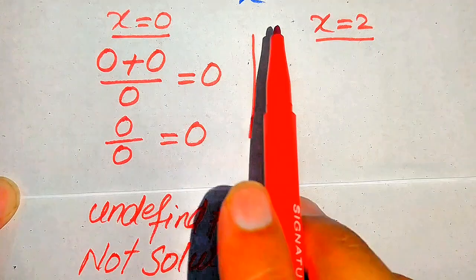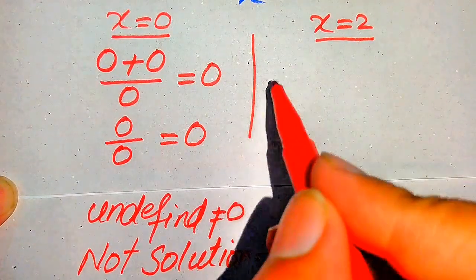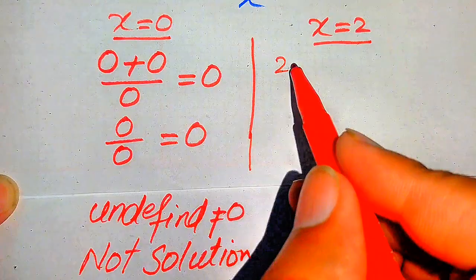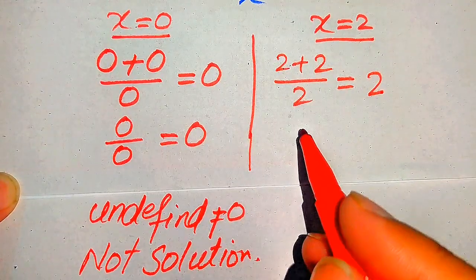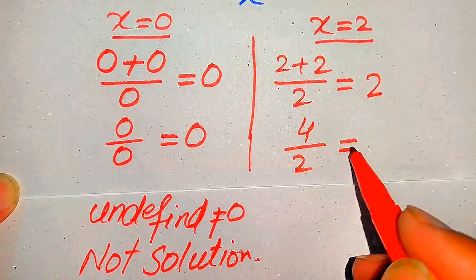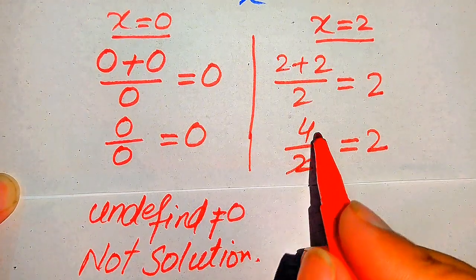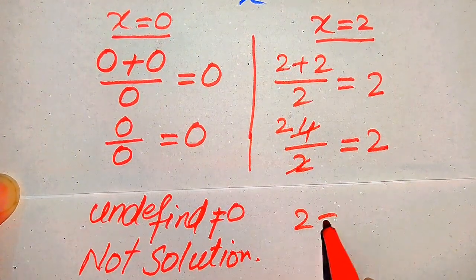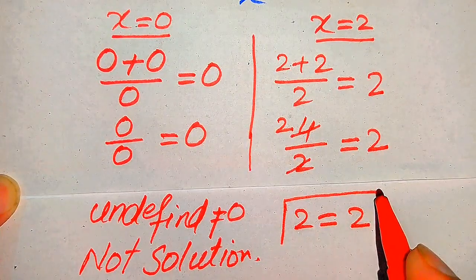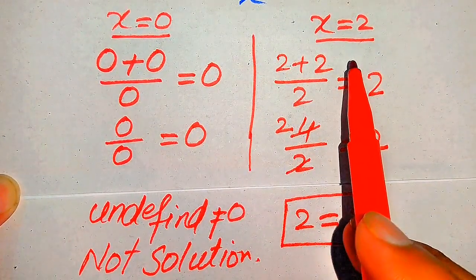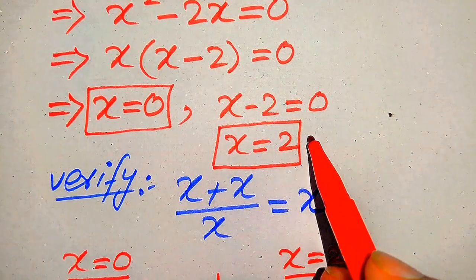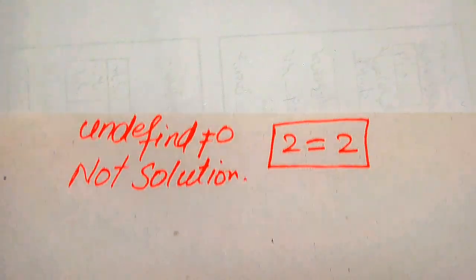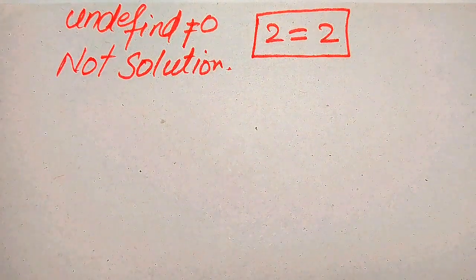We substitute x equals 2 into the given equation: 2 plus 2 divided by 2 equals 2. On the left side, 2 plus 2 gives 4, and 4 divided by 2 gives 2. So we get 2 equals 2, which confirms that x equals 2 satisfies our given equation.